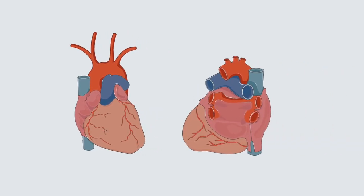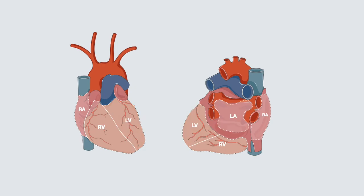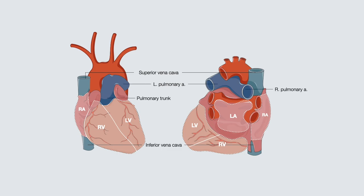Looking at the anterior and posterior views of the heart, note the following structures. This area is formed by the right atrium, this the right ventricle, here the left atrium, and this area is largely formed by the left ventricle. This is the superior and inferior vena cava, which carries systemic deoxygenated blood to the right atrium. This blood then moves into the right ventricle to be sent to the lungs via the pulmonary trunk, then to the left and right pulmonary arteries. Oxygenated blood from the lungs then enters the left atrium via the pulmonary veins, and blood moves to the left ventricle and enters the systemic circulation via the aorta.